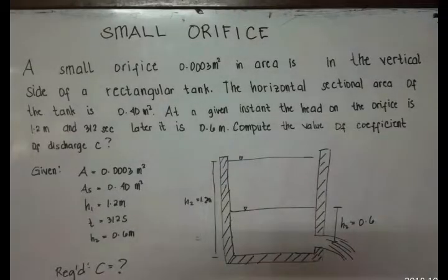Here is an example of a small orifice. A small orifice 0.0003 square meter in area is in the vertical side of a rectangular tank. The horizontal sectional area of the tank is 0.40 square meter. At a given instant, the height at the orifice is 1.2 meter, and 12 seconds later it is 0.6 meter. Compute the value of coefficient of discharge c.